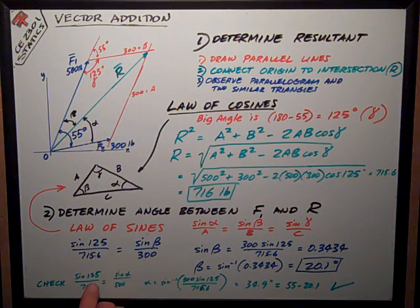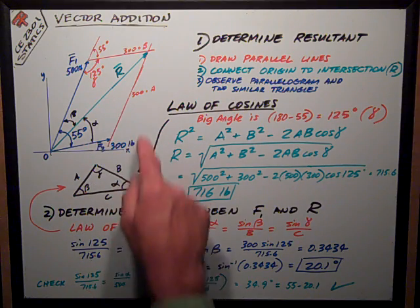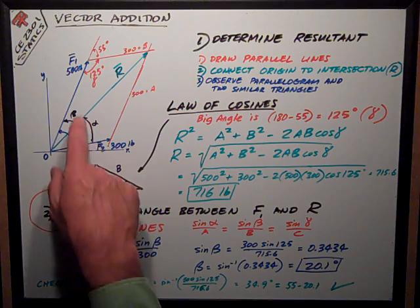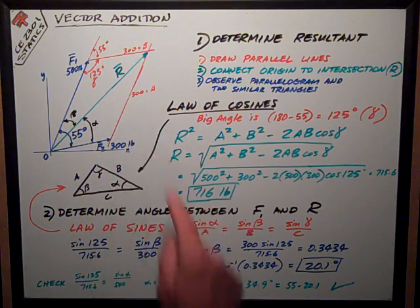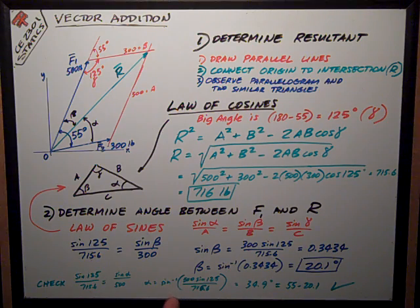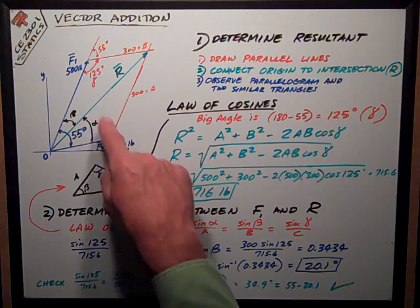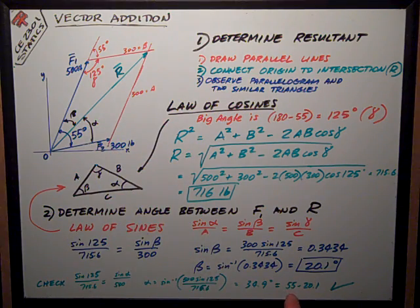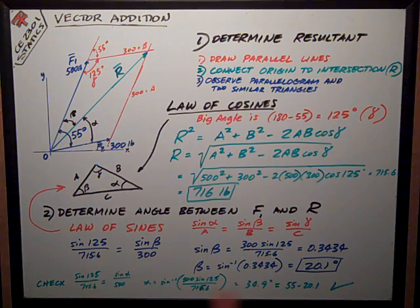I've still got this length. I know that's still 125 degrees because it's the opposite corresponding angle to that one. I check that sine of 125 over 715.6 should equal sine of alpha divided by 500. Rearrange, do the inverse sine, I get that angle alpha equals 34.9 degrees, which makes me feel happy because that is 55, this known angle, minus the beta angle 20.1. That checks out.